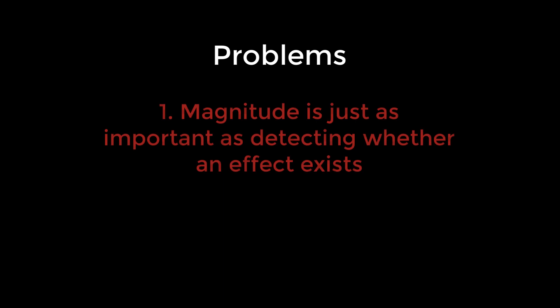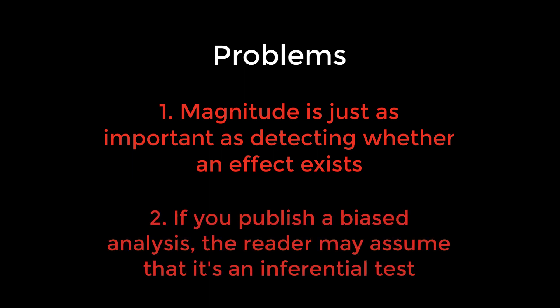The authors of the original paper claimed there are two problems with those arguments. First, the magnitude of the effect is just as important as detecting whether the effect is there, and biased analyses will systematically overestimate it. Why? Because small studies, by definition, can only detect large effects. The second is that if you publish a biased analysis, the reader may assume that it is an inferential analysis, even if it includes caveats about how it was done. If you absolutely insist on presenting them in a figure, at least don't include error bars.